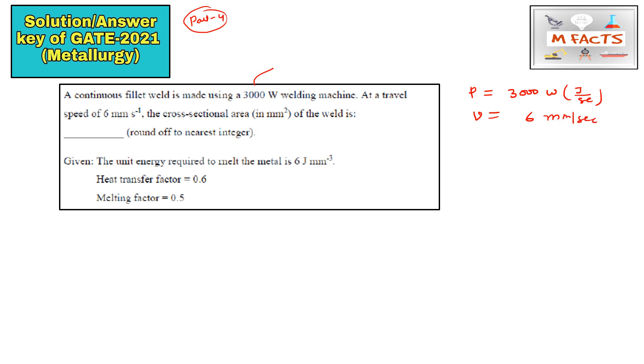The unit energy required to melt the metal is given as u equals 6 joule per mm cubed. Heat transfer factor is f1 and melting factor is f2. This type of question I have already done on our Instagram page. I uploaded this type of problem three or four months back.